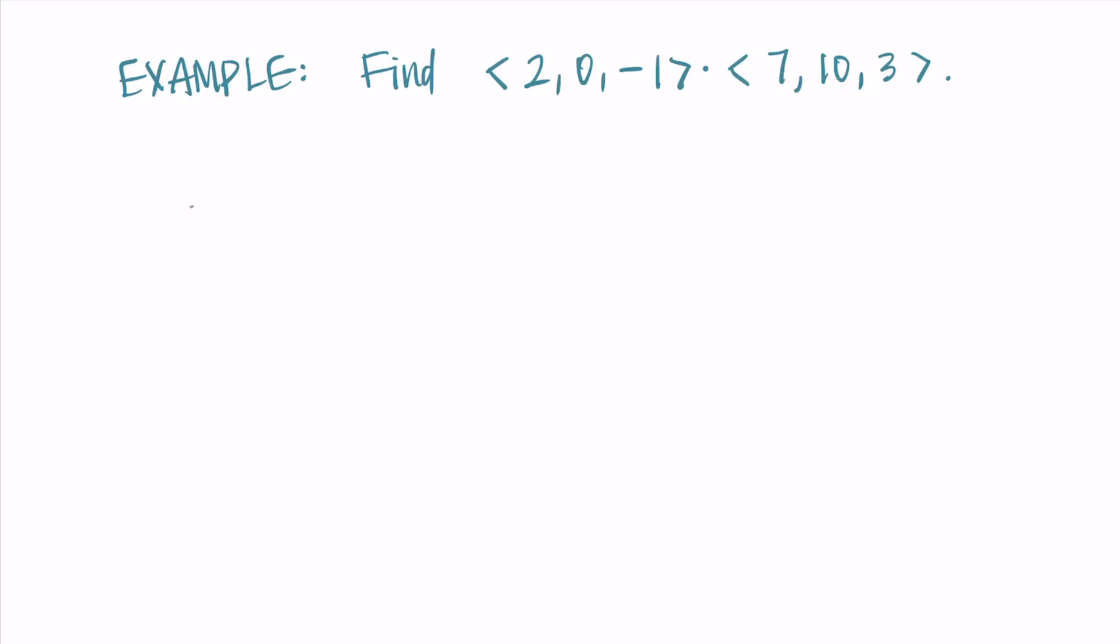So again, you can pause if you'd like, but I'm just going to go through it. We do the x components multiplied together, so that's 2 times 7, plus the y components multiplied together, 0 times 10, and the z components, negative 1 times 3.